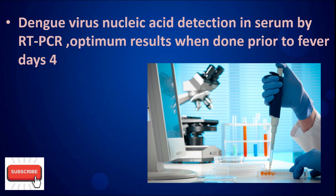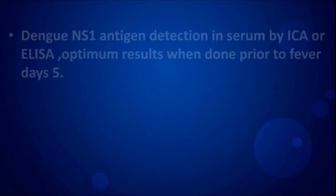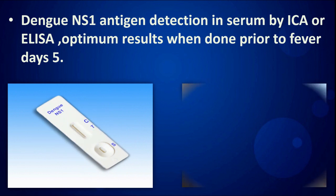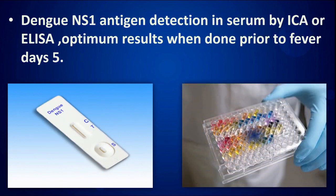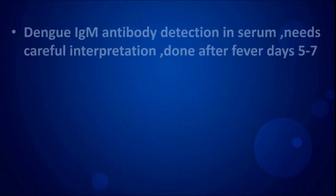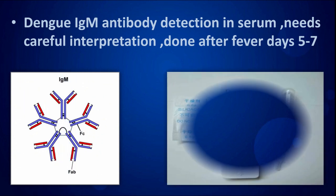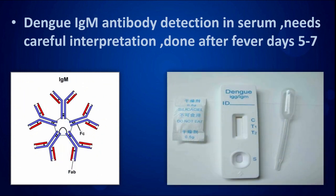RT-PCR and NS1 antigen detection in serum — by immunochromatography assay or ELISA — give optimum results when done prior to fever day 5. Dengue IgM antibody detection in serum needs careful interpretation and is done after fever days 5 to 7.